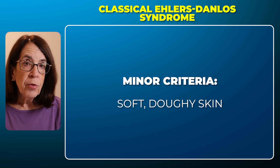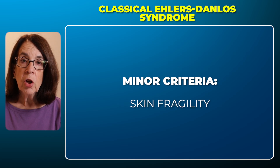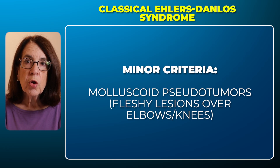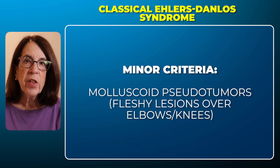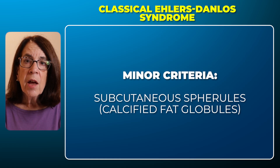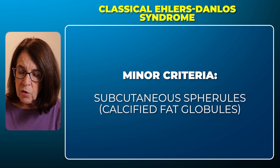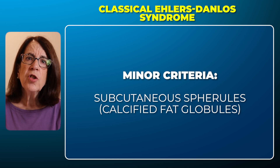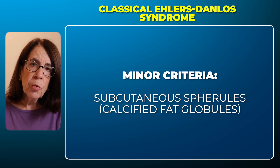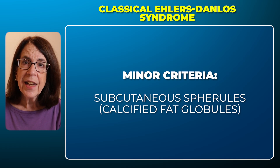The minor criteria include easy bruising, soft doughy skin, and skin fragility. They may also have molluscoid pseudotumors, which are fleshy lesions over the elbows and knees usually associated with scars. Another minor criterion is subcutaneous spherules — small hard granules underneath the skin that are movable and are due to fat lobules that have lost their blood supply and calcified.